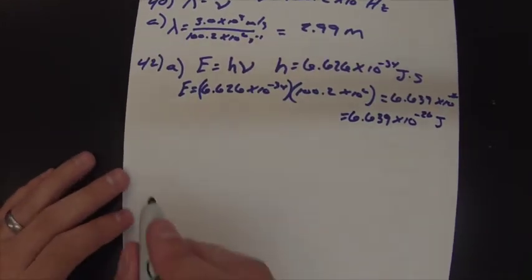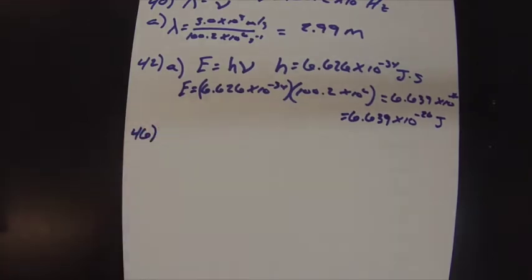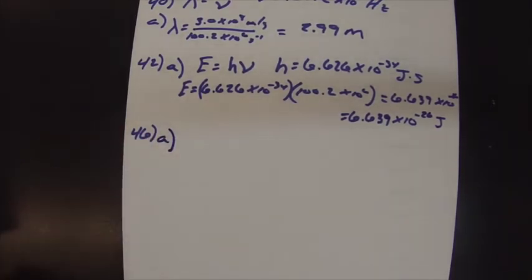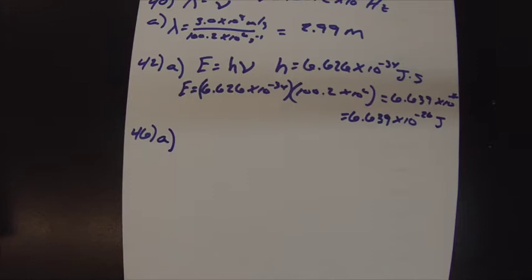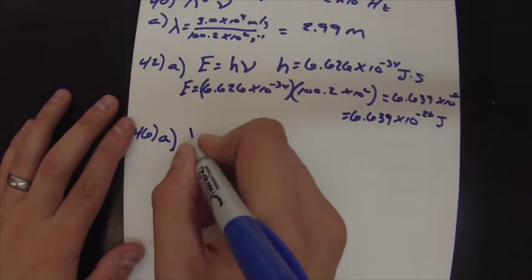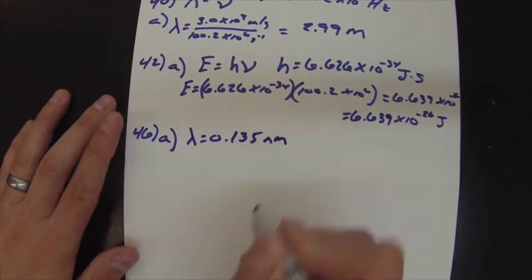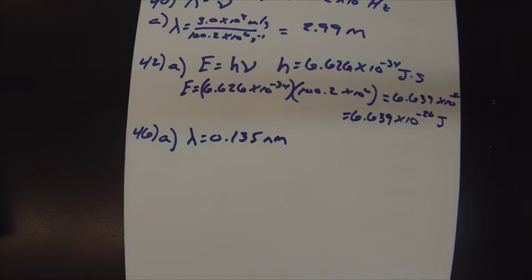Next up is number 46. Number 46 asks how much energy is contained in one mole of each — so we're probably using Avogadro's number. I'm going to do part A: one mole of X-ray photons with a wavelength of 0.135 nanometers. So we know the wavelength is 0.135 nanometers, and that's really all we need.